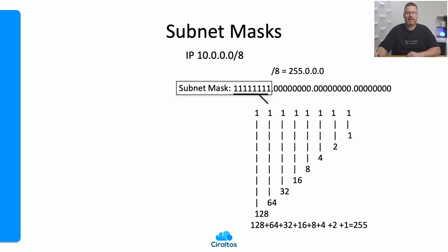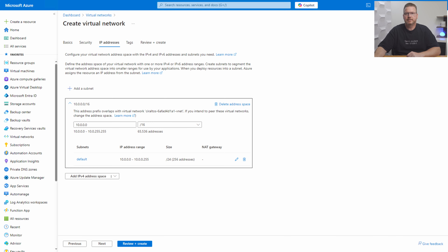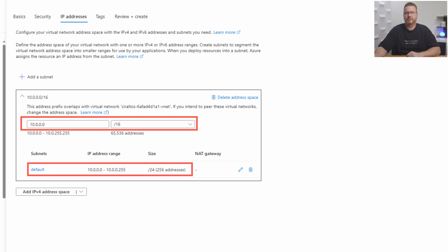In the example of subnet 10.0.0.0/8, the first octet — 10 — is the network address; the last three octets are host addresses. There's a problem with this example: there are a total of 2 to the power of 24 host addresses. This subnet will support one network — the 10 network — and over 16 million clients. Odds are your private network needs more than one subnet and probably has fewer than 16 million clients.